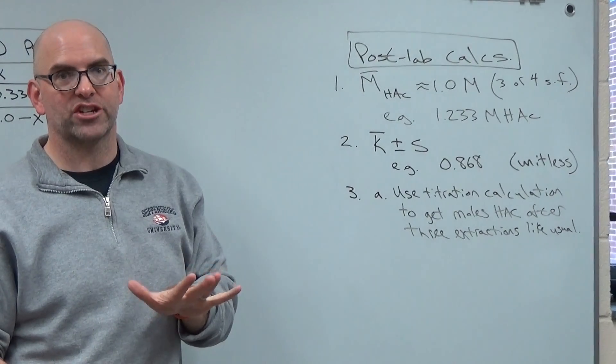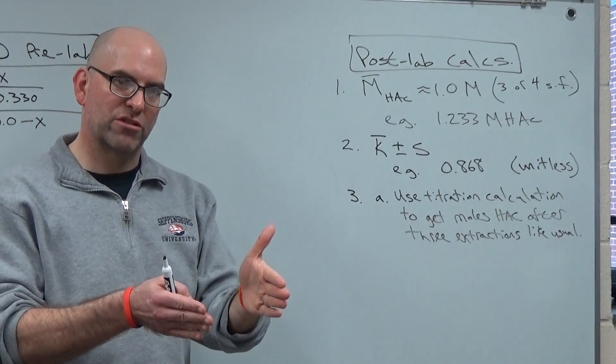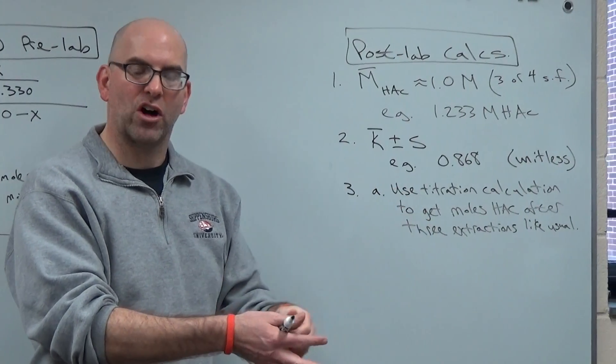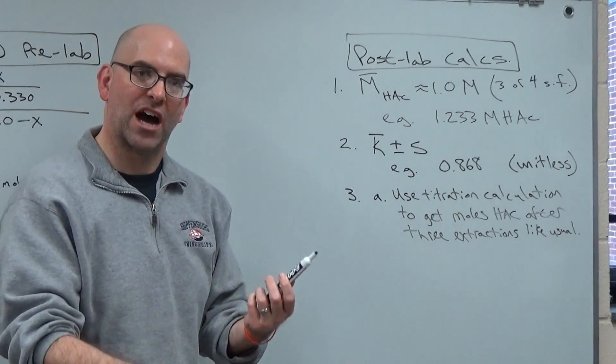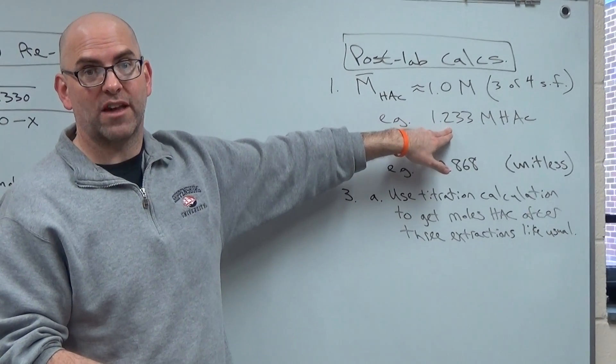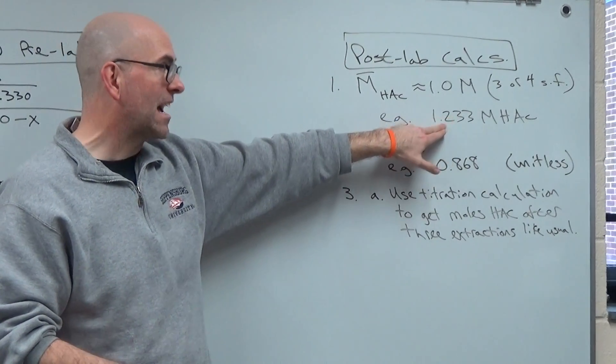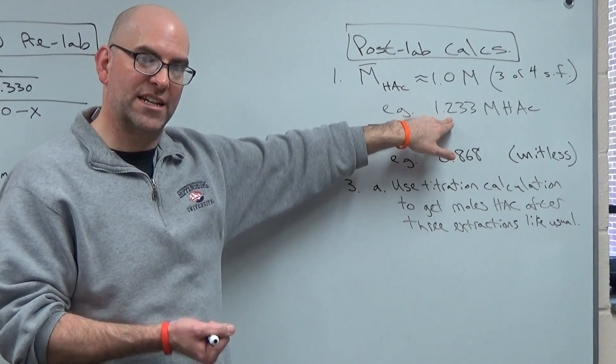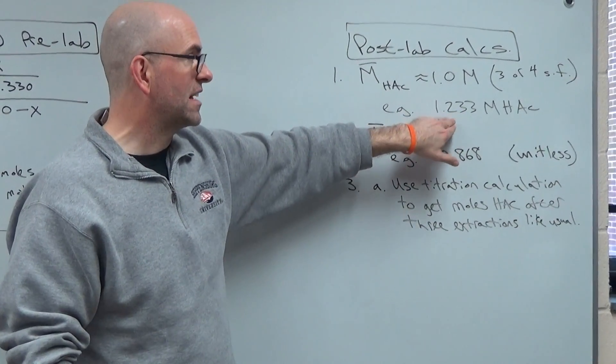I'm not reviewing the titration calculation, but it's molarity times volume of the NaOH, the one-to-one mole ratio, divided by the volume of the acetic acid. You do that three times, you take an average, and here's an example of one of your classmates' answers, right here. Now, you may not get exactly this. You may only have three sig figs. Go where the data tell you. So that's just an example.